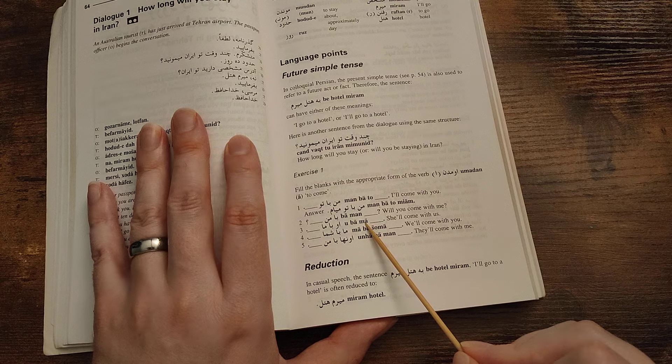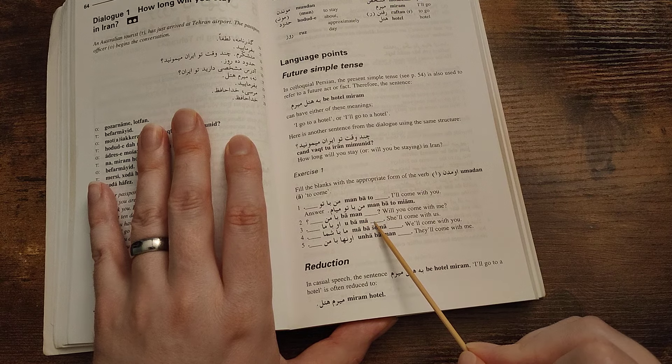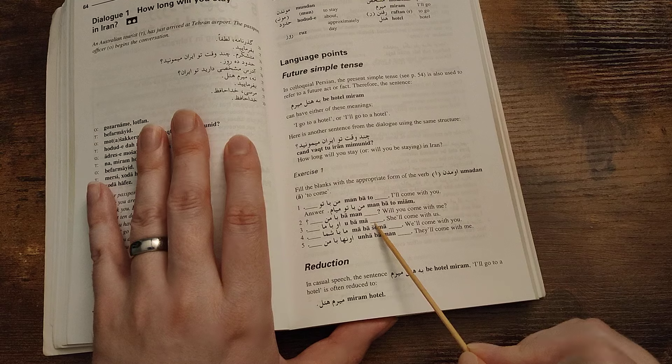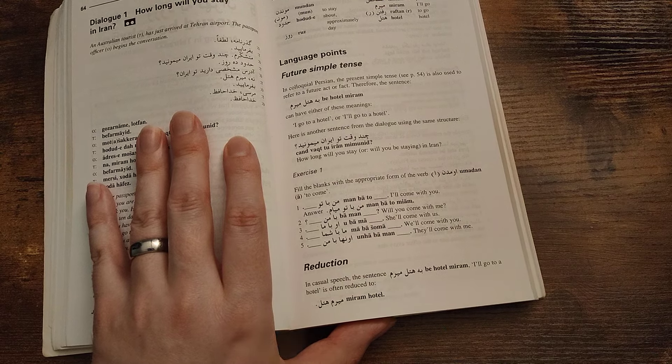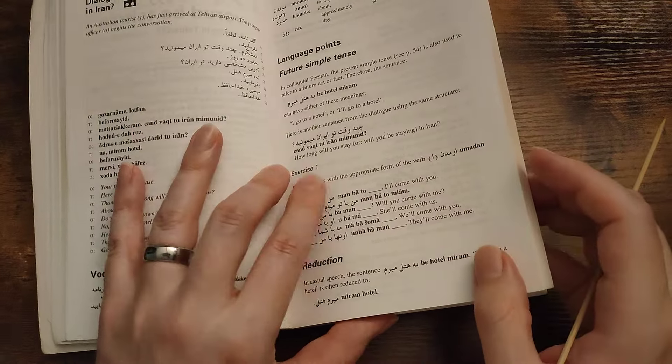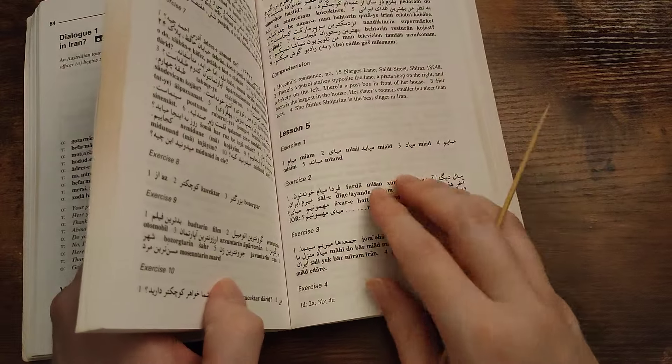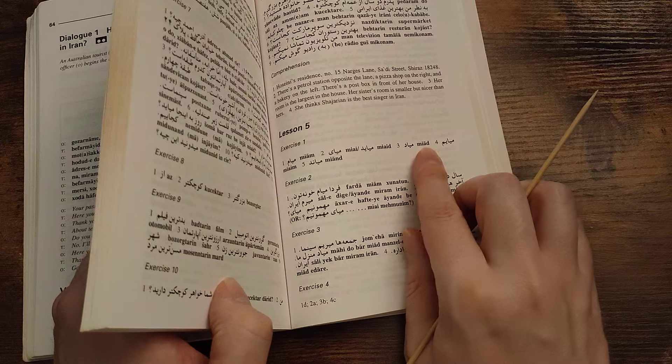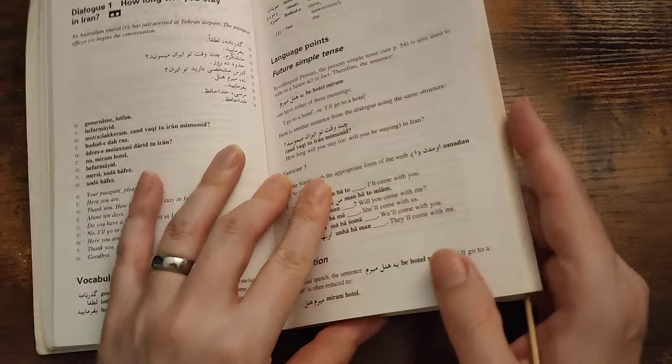U ba ma should be miyad. It seems like it's wrong. It's quite a difficult word they've given me. Miyad-e. No, that's miyad. Okay, miyad. I'm not very good at this.